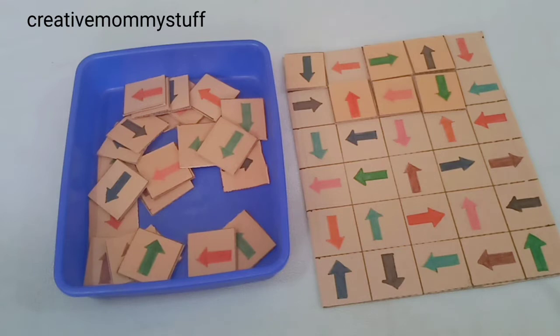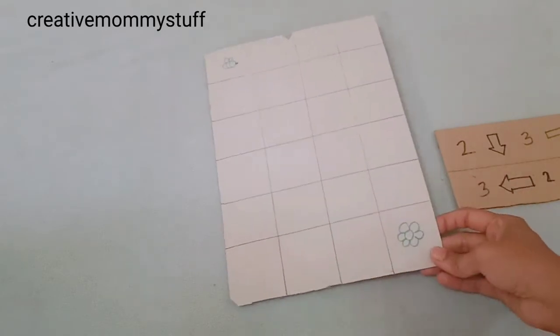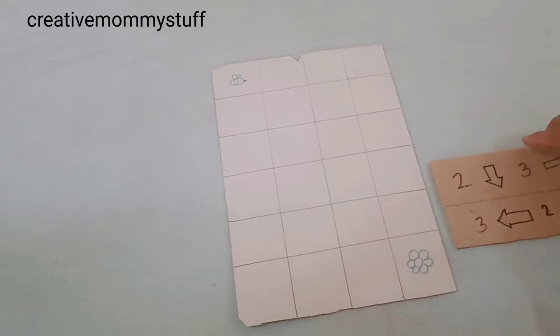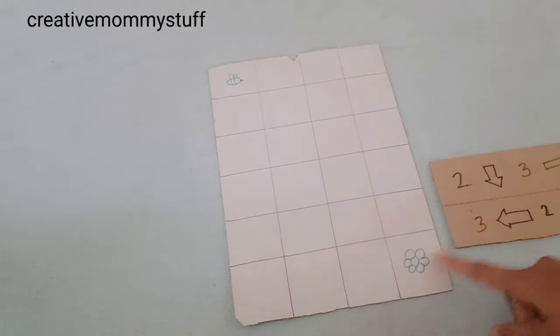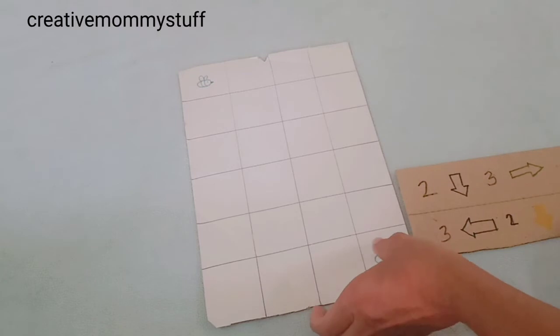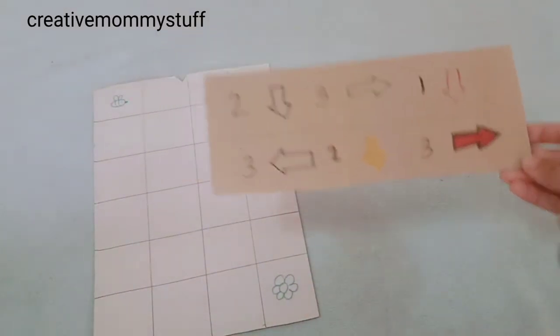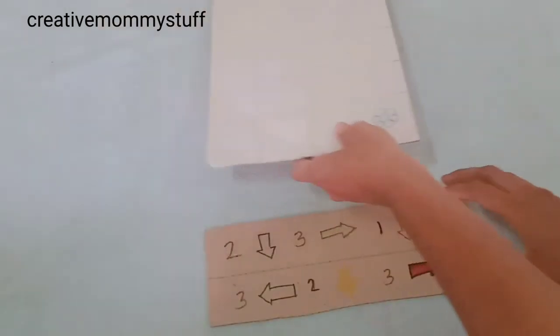Now for the last one, I have this sheet and I have used this activity in my worksheet, so I thought to just do it into an activity. Here is a bee and here is a flower, and this is the instructions to be followed sheet like this. Now we will see how to do this.